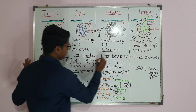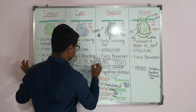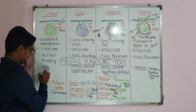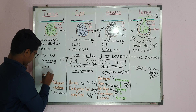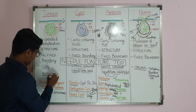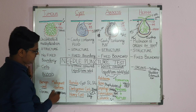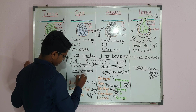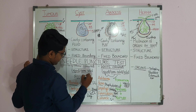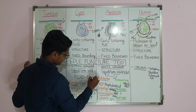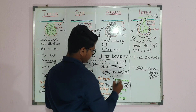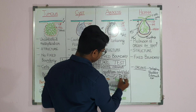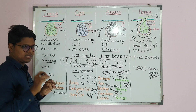Once hernia is ruled out, do a needle puncture test for the remaining three conditions. In case of a tumor, you will find blood coming through the needle. In case of a cyst, you will find straw-colored fluid. In case of an abscess, you will find pus.